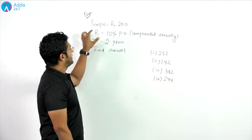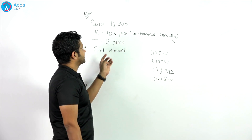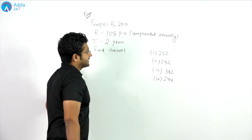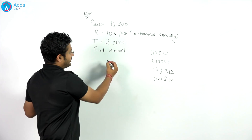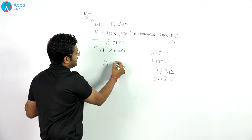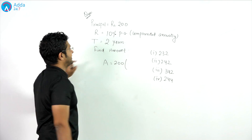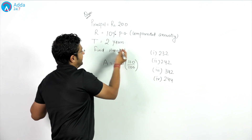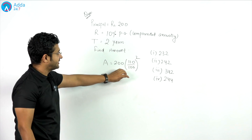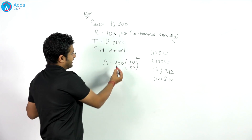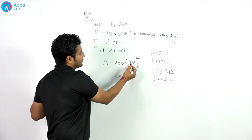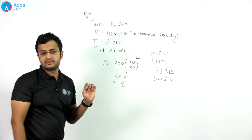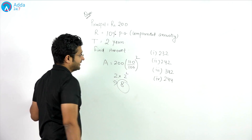Let's take one more example. Principal is 200, rate is 10% per annum, and time is 2 years. Find the amount. The amount will be 200 × (110/100) squared. The digital sum of 200 is 2. The digital sum of 110/100 is: 1 plus 1 is 2, and 2 plus 0 is 2, so it's 2 squared. Therefore, the digital sum is 2 × 2 squared, which equals 2 × 4 = 8. The digital sum of the amount is 8.